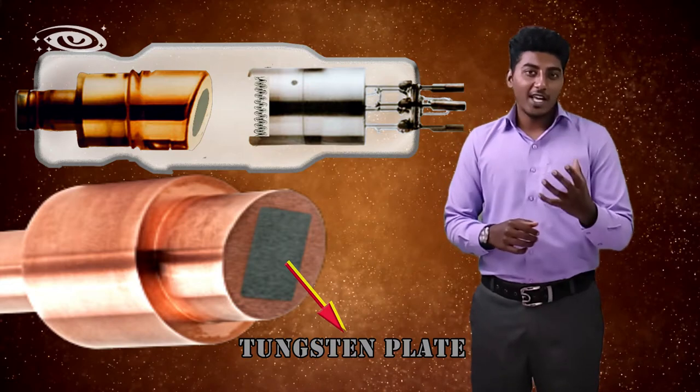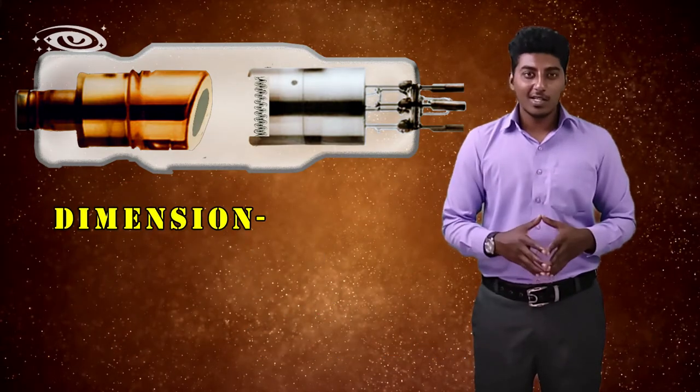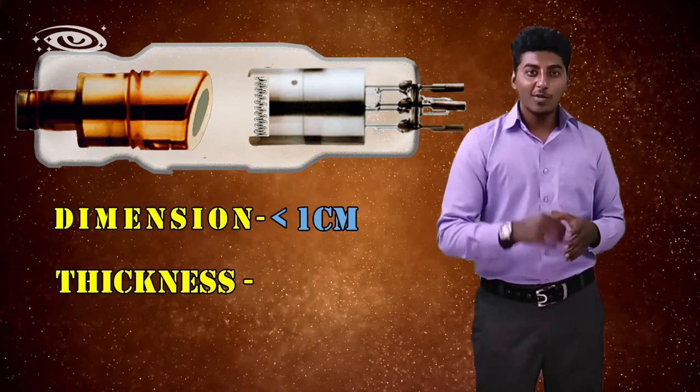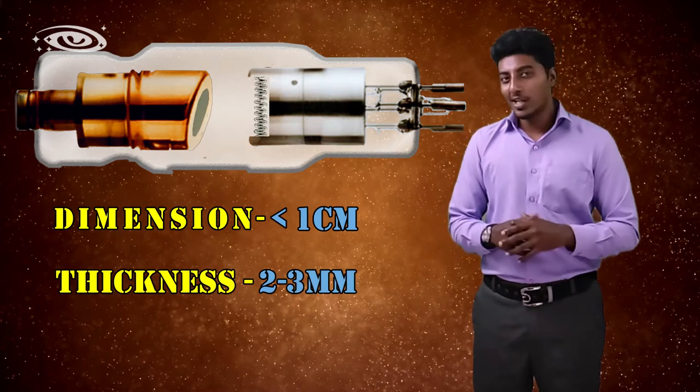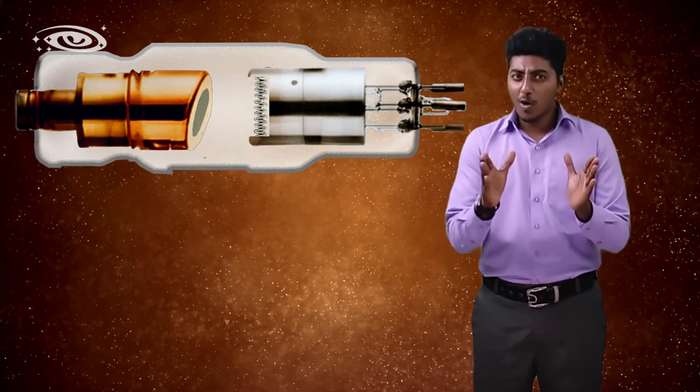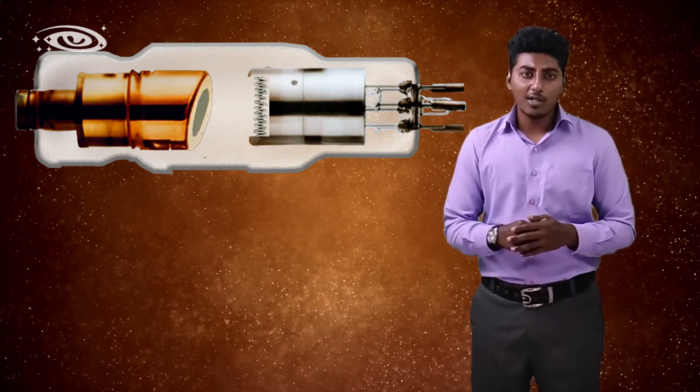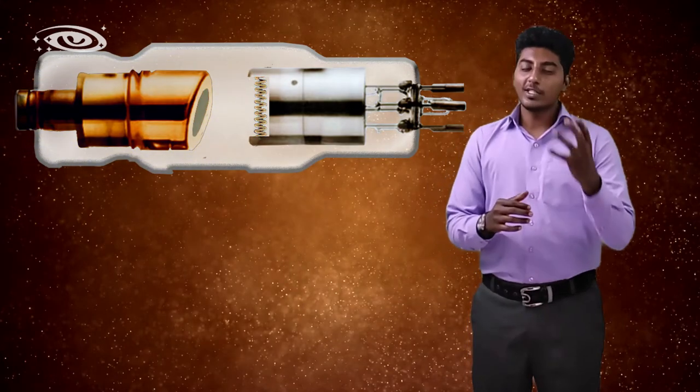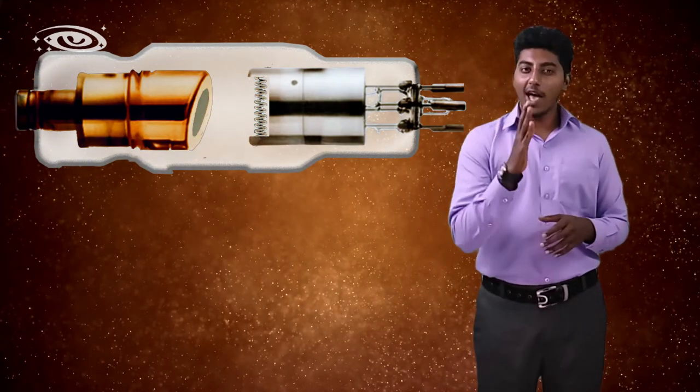The dimension of the tungsten plate is more than one centimeter, and the thickness is two to three millimeter. This tungsten plate is embedded with the copper block. The use of copper block is it can dissipate heat immediately, so the tube life will be increased.